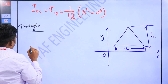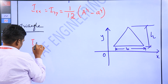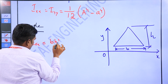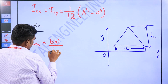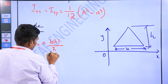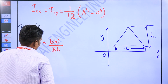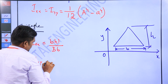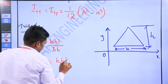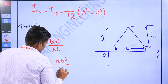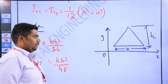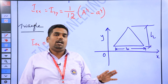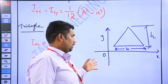From this, we can calculate the formula. First one: Ixx = bh³ divided by 36. Similarly, Iyy about the Y-axis: hb³ divided by 48. So this is the triangle formula.